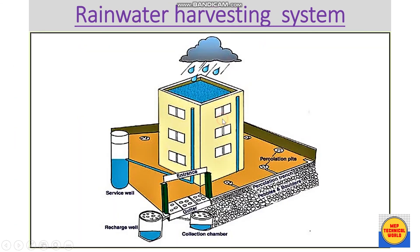Now coming to the rainwater harvesting system — this is the basic view of a rooftop rainwater harvesting system. During rainfall we can store water and later use it for daily life purposes. Another use of the rainwater harvesting system is to recharge underground water. During rainfall, this water is drained to a recharge well, which is made up of boulders, coils, and aggregates. With the help of rainwater drain pipes, the underground water level is recharged and increased.